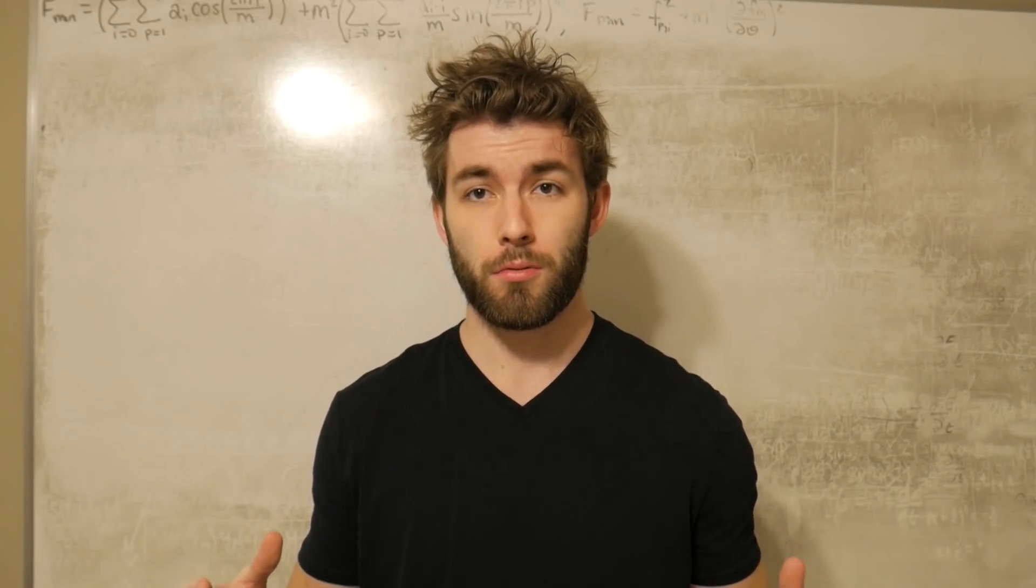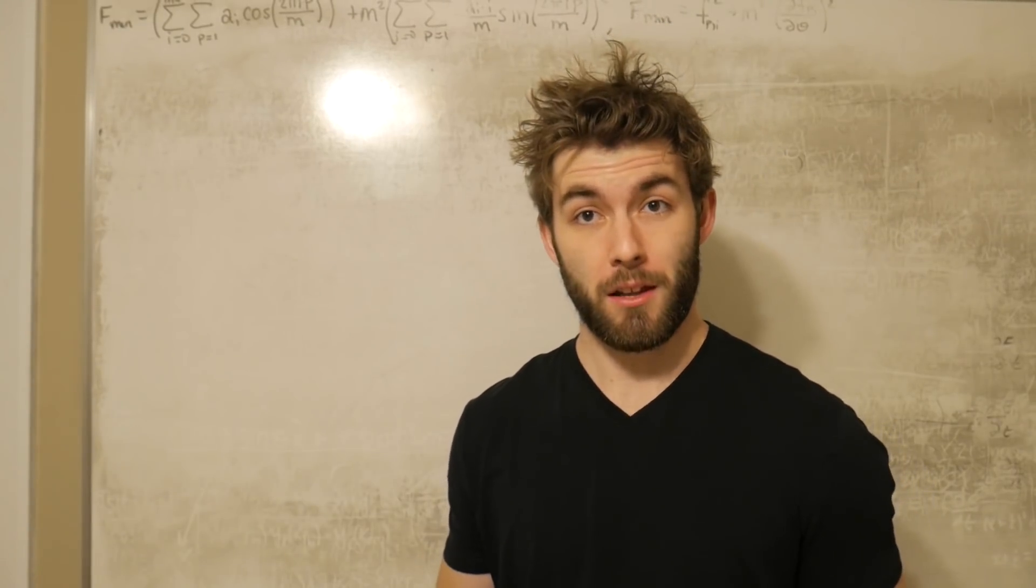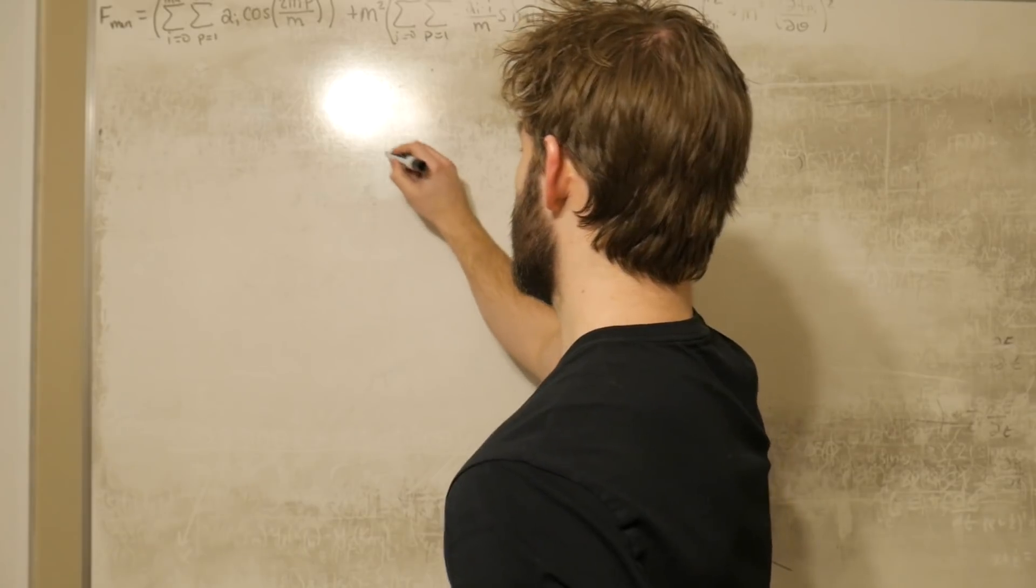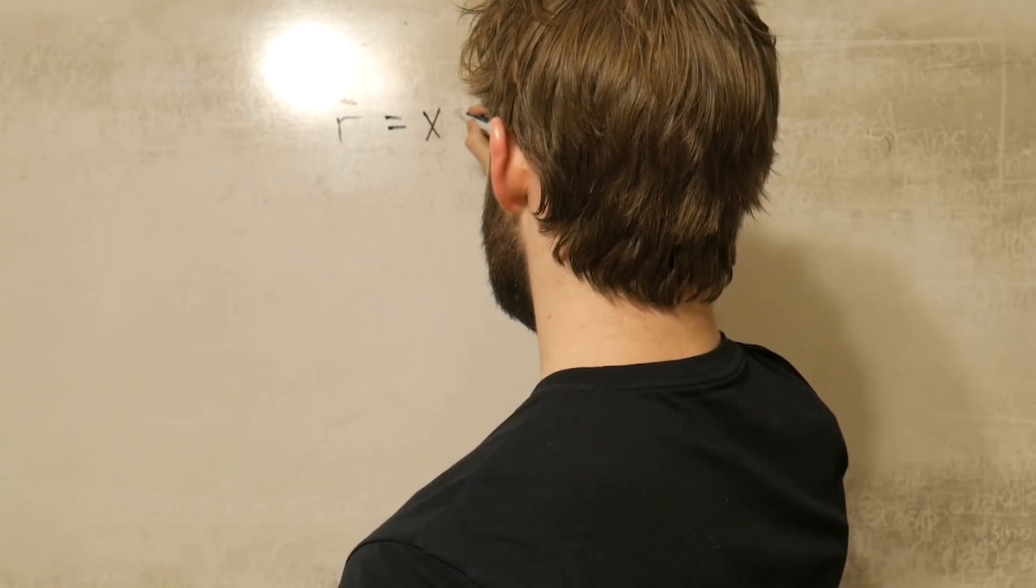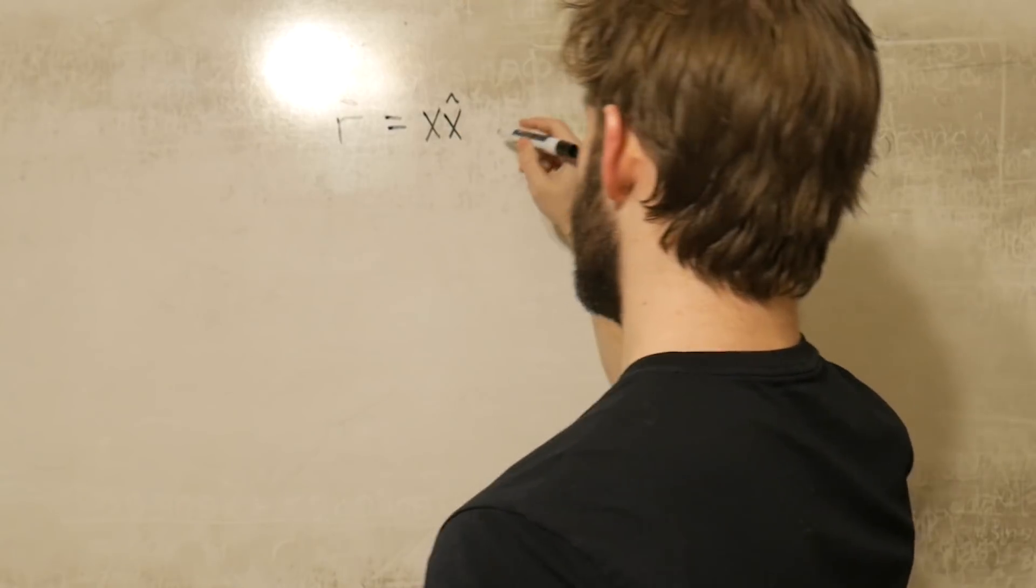The goal of this video is to derive the unit vectors in spherical coordinates. Now in order to do that, we actually have to stay in Cartesian for a little bit longer. We can define a position vector r that is written as a combination of the Cartesian unit vectors scaled to some degree.